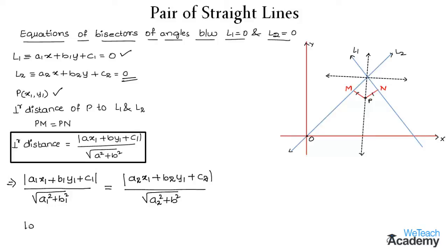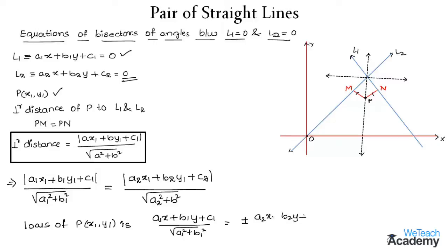Therefore, the locus of point P(x1, y1) gives us the equation: (a1x + b1y + c1) / root(a1² + b1²) equal to plus or minus (a2x + b2y + c2) / root(a2² + b2²). This is the condition to find the equations of bisectors of angles between lines L1 and L2.